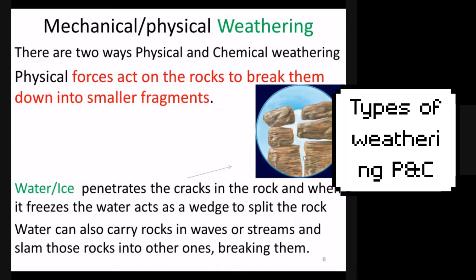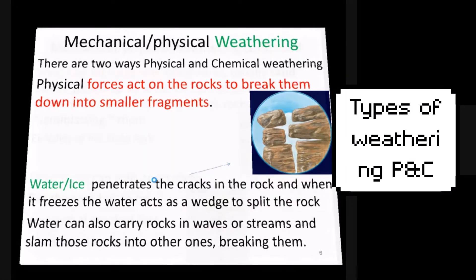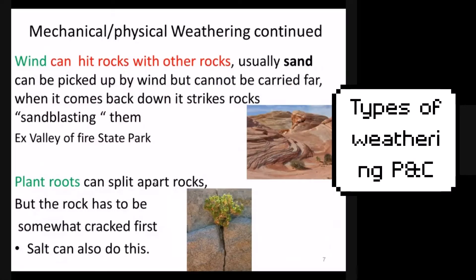Water can also cause physical weathering beyond ice wedging — waves or streams can slam rocks into other rocks, breaking them slightly. That's more of an erosion process, but it also weathers rocks as well. For wind, wind can pick up bits of rocks and slam them into other rocks. In a sandstorm, sand gets picked up by wind and when it falls back down it hits rocks, breaking them ever so slightly.